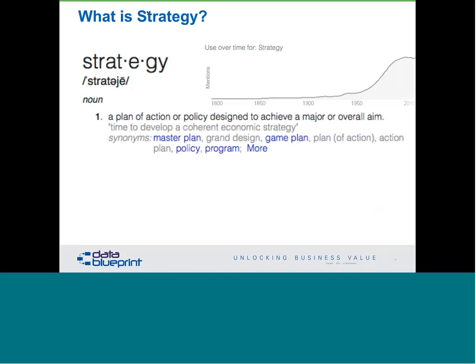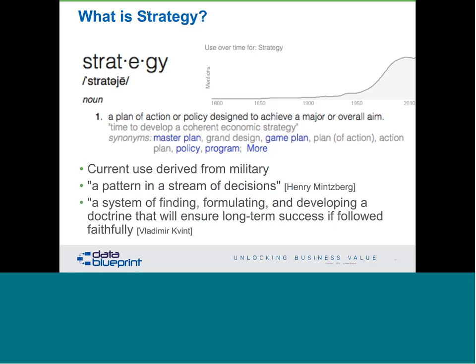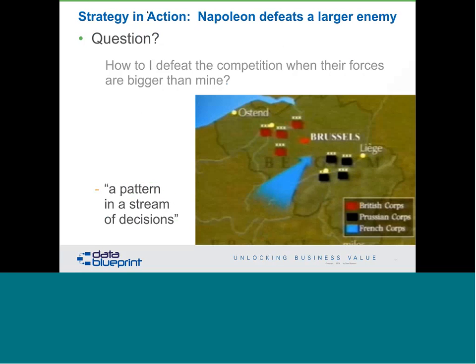Strategy — in the 1950s, if you had used the word strategy, people would not have known what you meant unless you were in a military context. A good definition is: a system for finding, formulating, and developing a doctrine that will ensure long-term success if followed faithfully. The one I like a little better is: a pattern in a stream of decisions. Notice neither of these refers to a three-ring binder on a shelf — it's more a way of being and living something.